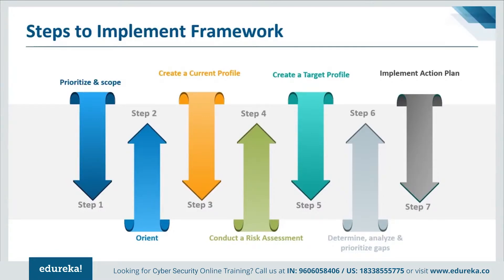Step 7 is to Implement the Action Plan: the organization determines which actions to take to address the gaps identified in the previous step and then adjusts its current cybersecurity practices to achieve the target profile. The framework identifies examples of informative references regarding the categories and subcategories, but organizations should determine which standards, guidelines, and practices — including those that are sector-specific — work best for their needs. An organization repeats the steps as needed to continuously assess and improve its cybersecurity. Organizations may find that more frequent repetition of certain steps improves the quality of risk assessments, and may monitor progress through iterative updates to the current profile, subsequently comparing the current profile to the target profile to align their cybersecurity program with the desired framework implementation tier.